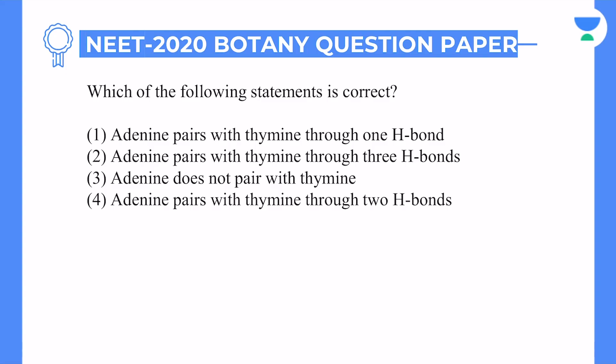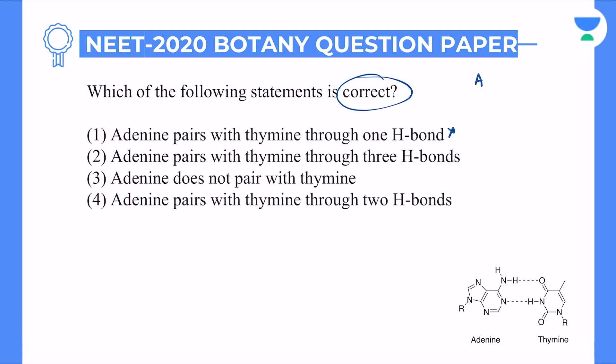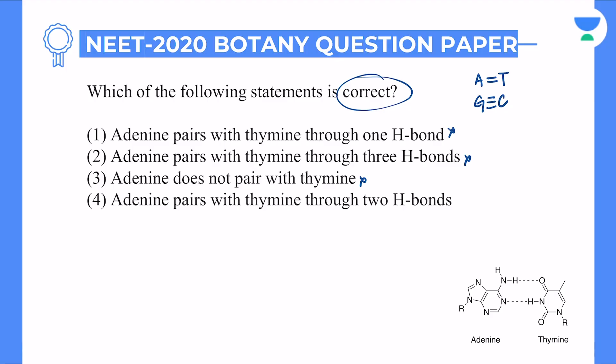Next question has to do with 2-3 chapters — biomolecules and molecular basis of inheritance. Which of the following statements is correct? First option: adenine pairs with thymine through one hydrogen bond — nobody binds with one hydrogen bond, too weak. Adenine actually pairs with thymine through two hydrogen bonds, while guanine pairs with cytosine through three hydrogen bonds. Third option: adenine does not pair with thymine — wrong, it does. Finally, option four: adenine pairs with thymine through two hydrogen bonds — absolutely correct, that is the correct answer, option number four.